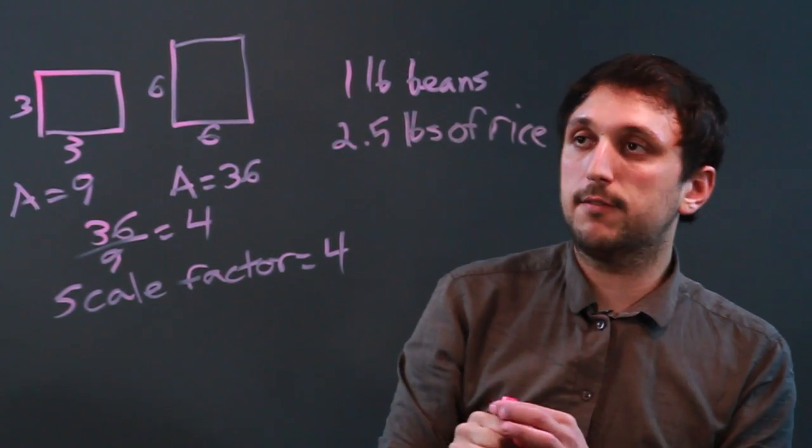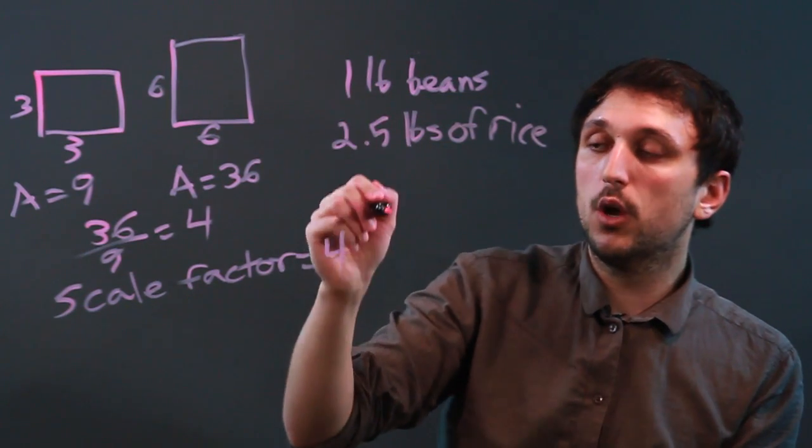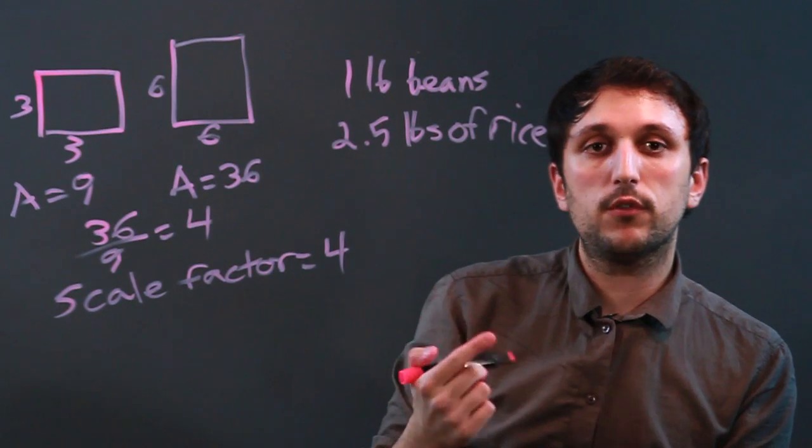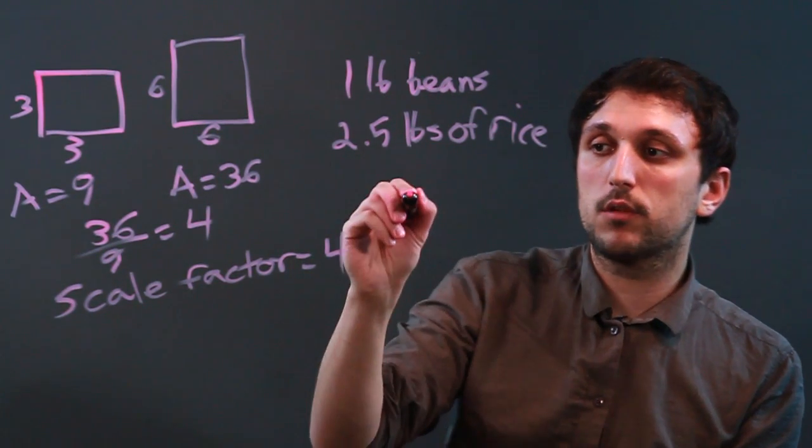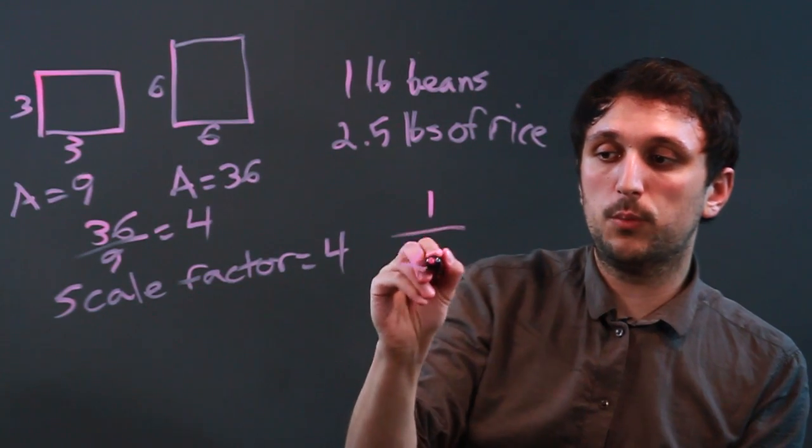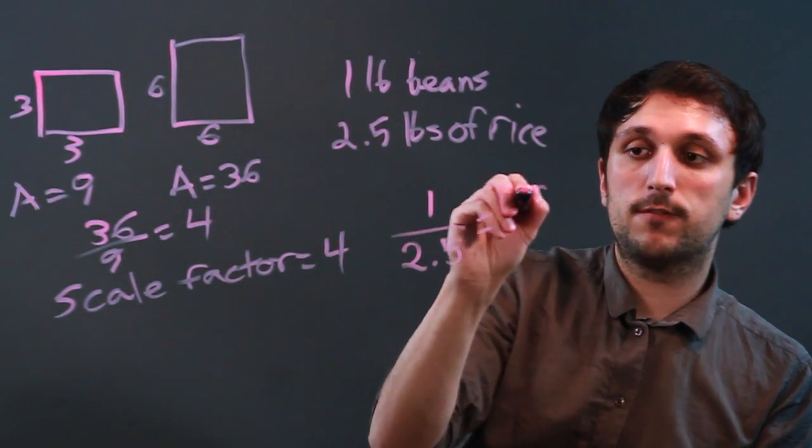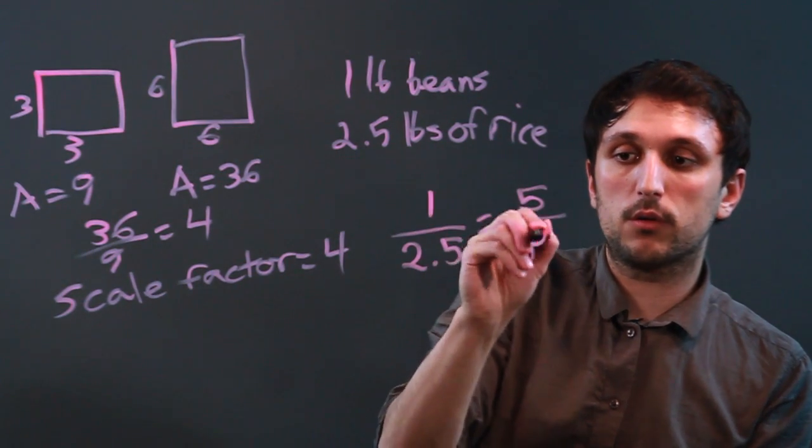And if that's the ratio or the proportion, we can say, okay, well, how many pounds of rice do we need if we bought 5 pounds of beans? So we say 1 over 2.5 equals 5 over x.